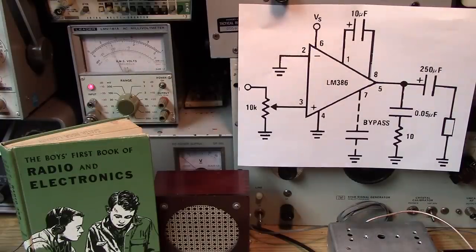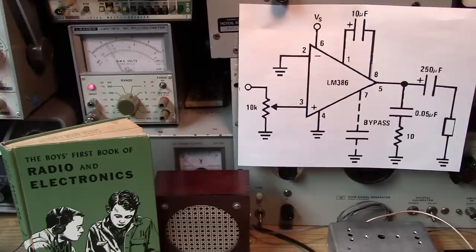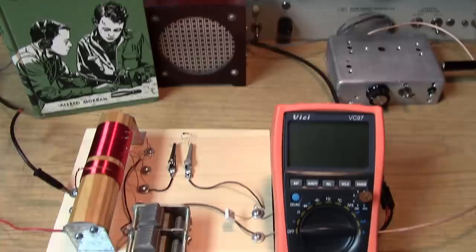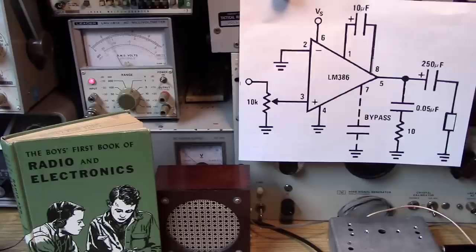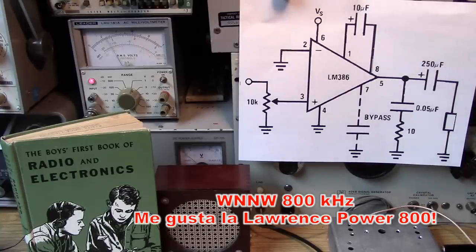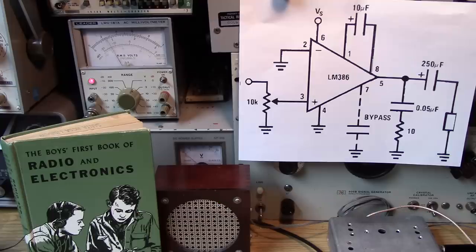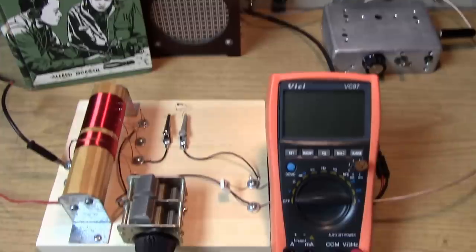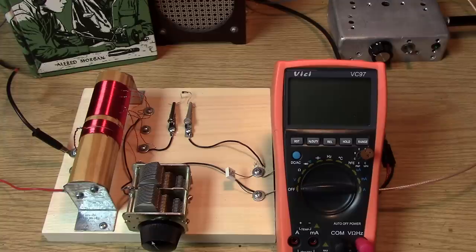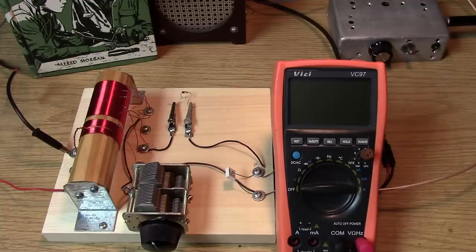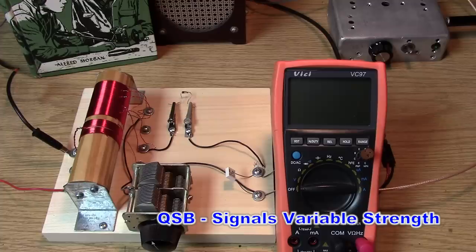This is a much weaker station out of Boston, a Spanish station. The scale, instead of being on the 100 millivolt scale, we're on the 10 millivolt scale. We're popping around 2 to 3 millivolts RMS. This will be a good station to use for comparing the diodes. We want to do this testing during the day using ground wave, not sky wave at night where signals are going up and down. When signals go up and down, the hams call that QSB.